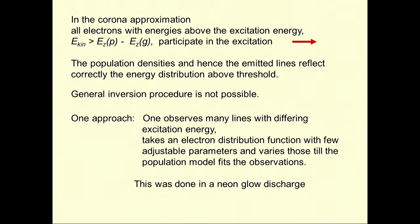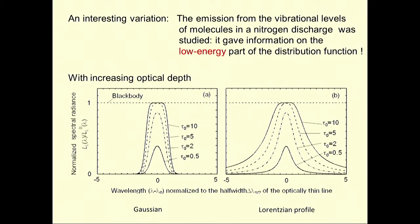If we have corona equilibrium, can one measure the electron distribution function? One experiment was done in Greifswald. When you have excitation, you excite using all electrons above the excitation energy threshold — usually the tail of the distribution. When you go to another level, you probe another part of the tail. By taking different levels systematically, the excitation is different because you use different parts of the electron energy distribution function. This was done in a neon glow discharge, and information on the distribution function was obtained. But this is not a very general or easy-to-use technique.